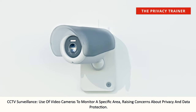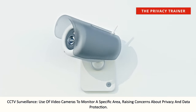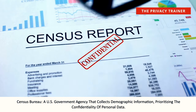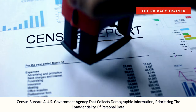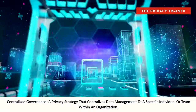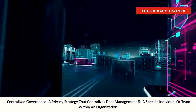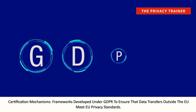CCTV surveillance. Use of video cameras to monitor a specific area, raising concerns about privacy and data protection. Census Bureau. A US government agency that collects demographic information, prioritizing the confidentiality of personal data. Centralized Governance. A privacy strategy that centralizes data management to a specific individual or team within an organization. Certification mechanisms. Frameworks developed under GDPR to ensure that data transfers outside the EU meet EU privacy standards.